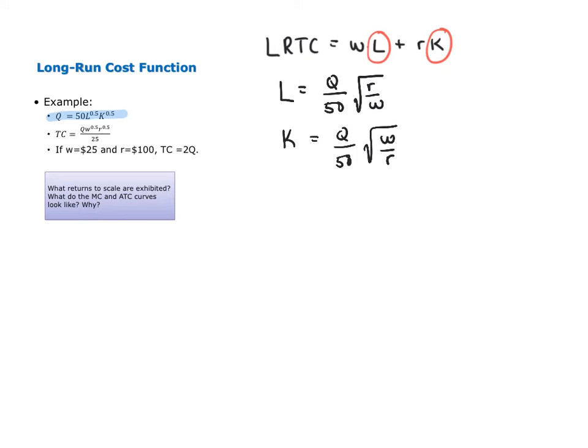With these input demands in hand, now we're ready to construct the long-run total cost function. We're going to multiply each input demand by its price and then mathematically simplify. So here I have W times Q over 50 times the square root of R over W, which can be simplified to Q over 50 times the square root of W times R.